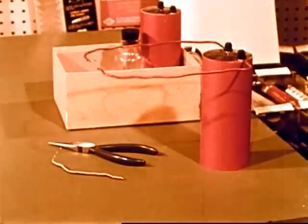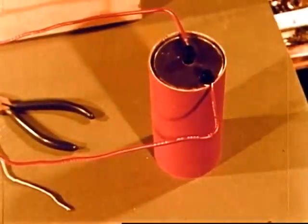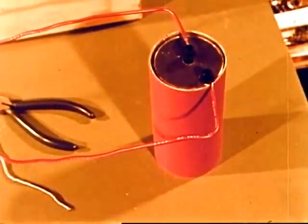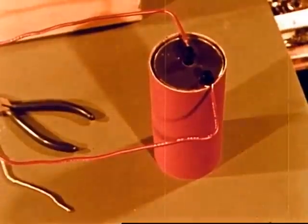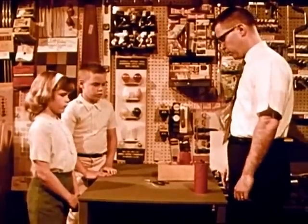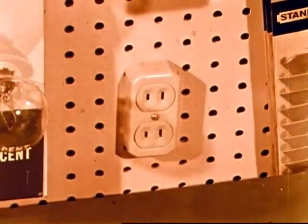First he tells them about the kind of battery he's using. This battery, just like the flashlight batteries, is safe to handle because it produces only a small amount of electricity. But the electricity that we use in our homes is not safe for us to handle for experiments.